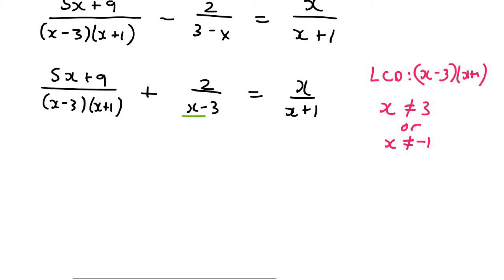And so now we need to realize that this one is going to be multiplied by x plus 1. And this one is going to be multiplied by x minus 3. This one doesn't need anything because it already has everything. So it's going to look like this.